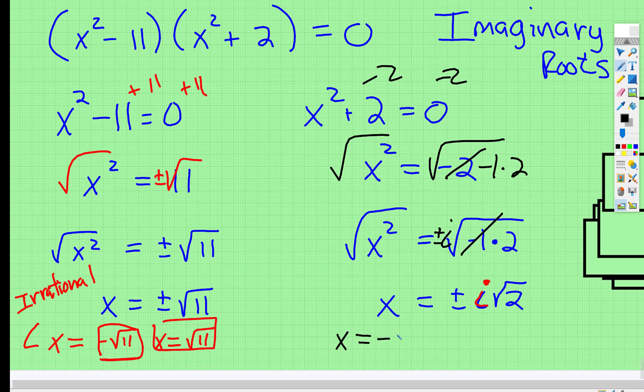x is equal to negative i root 2, and x is equal to positive i root 2. So imaginary roots come in pairs.